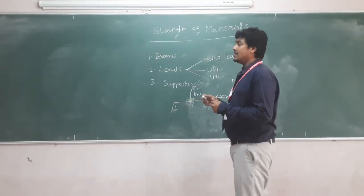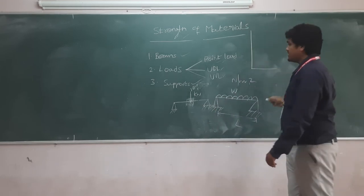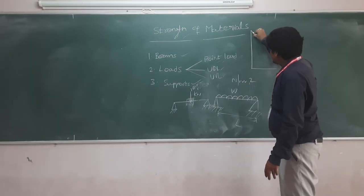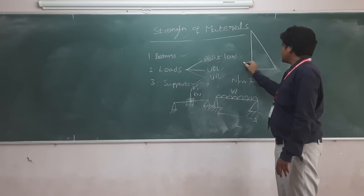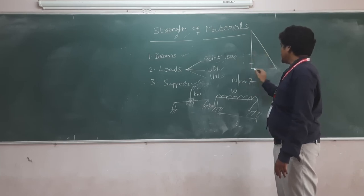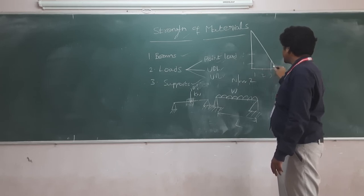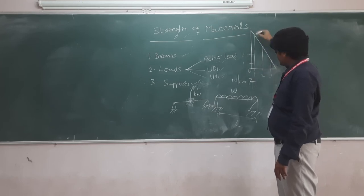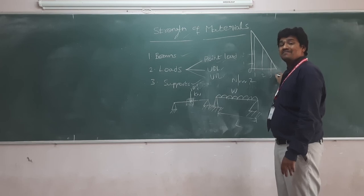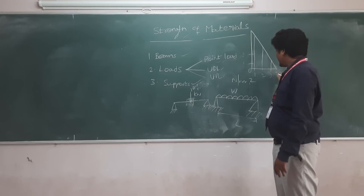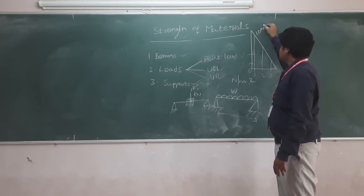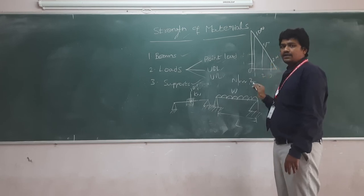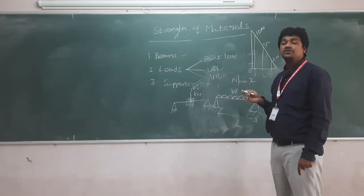UVL — uniformly varying load. It can be a triangular load or trapezoidal load. Here the load is varying from point to point. For example, consider points along the beam: at zero the load is zero, at the first point some value, at the second point a different value, and at the third point another value. When the load varies according to the length, we can call that a uniformly varying load.